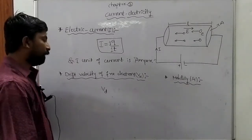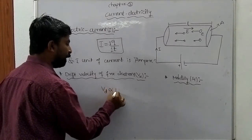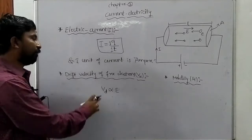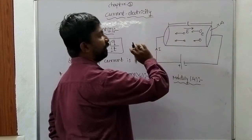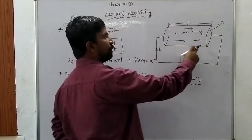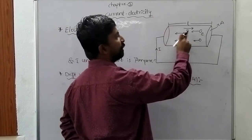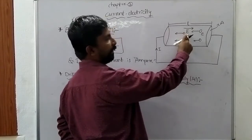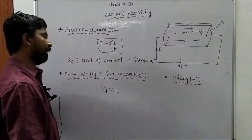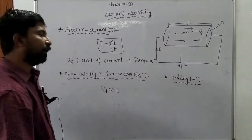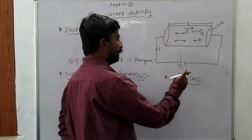Drift velocity is the velocity gained by the free electrons in the direction opposite to the applied electric field. That is called the drift velocity of the free electrons. VD is proportional to E.